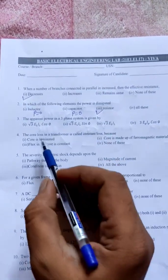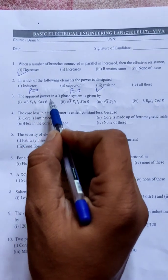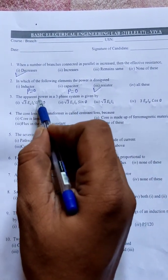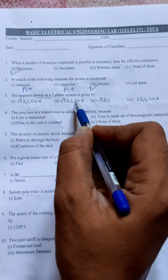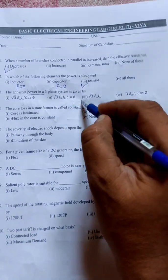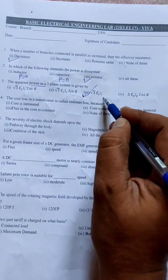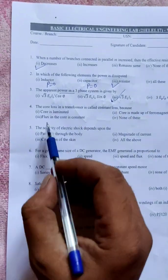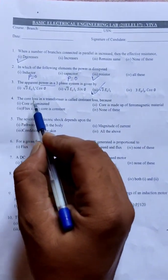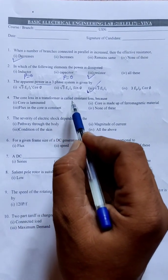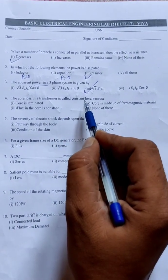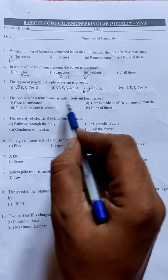Next, the apparent power in a three-phase system. See, apparent power already this question repeated in set three. So apparent power is root three VL into IL.